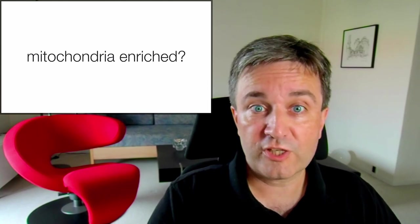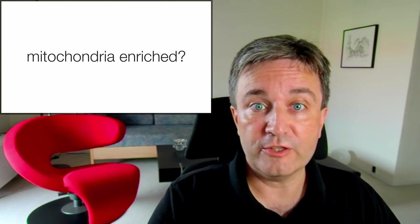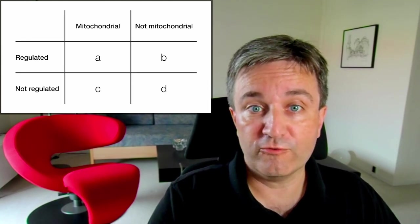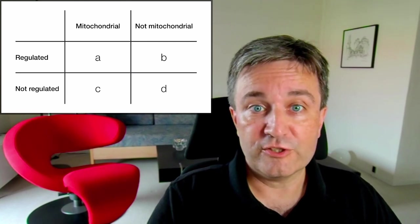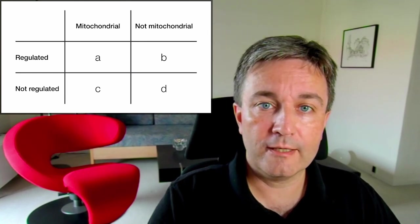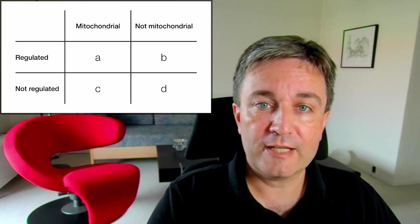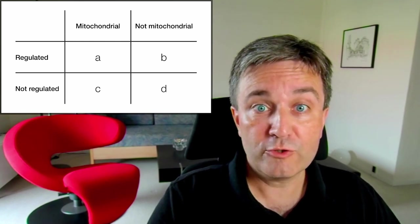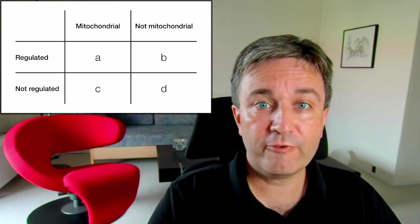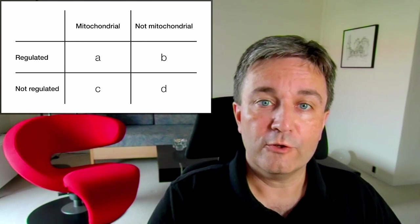You can now take all protein coding genes in the genome and divide them into four classes: the proteins that are regulated and mitochondrial, regulated but not mitochondrial, mitochondrial but not regulated, and finally neither regulated nor mitochondrial.